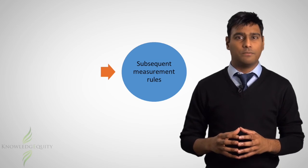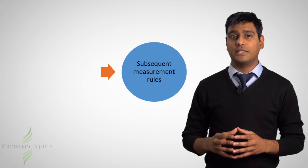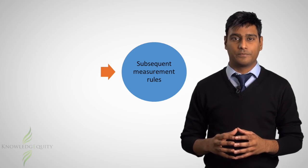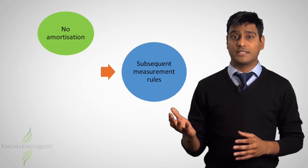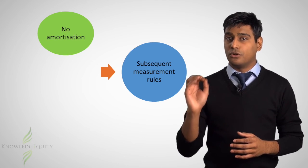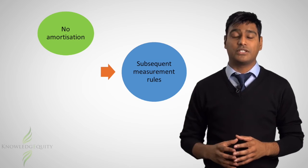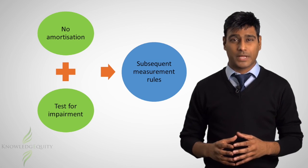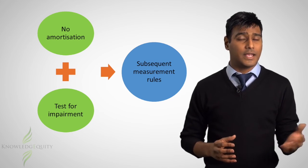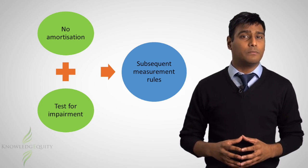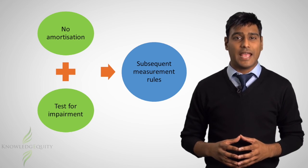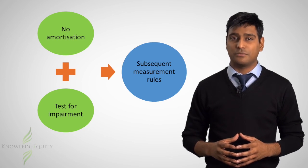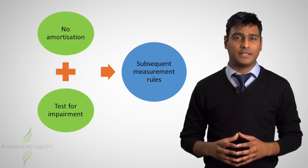There are two important rules relating to subsequent measurement of goodwill. The first is that no amortization is permitted for goodwill, and the second is that goodwill must be tested annually for impairment in terms of IAS 36.